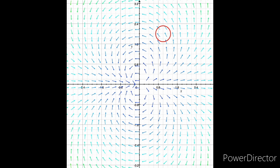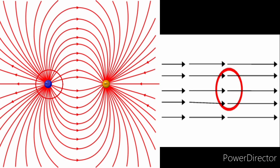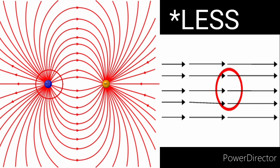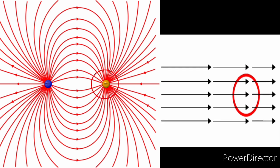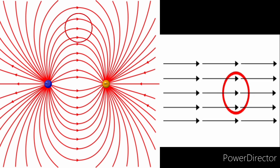Divergence gives us the amount of outward flux of a vector field from an infinitesimally small volume around a given point. Here, the field entering the circle is more than that going out of it, implying there is a net outward flow — so this region is a source of that vector field and is said to have a positive divergence. But here, there is a net inward flow, which implies this region is a sink and is said to have a negative divergence. Here, the field entering the circle is exactly the same as that leaving the circle, so this region has zero divergence.